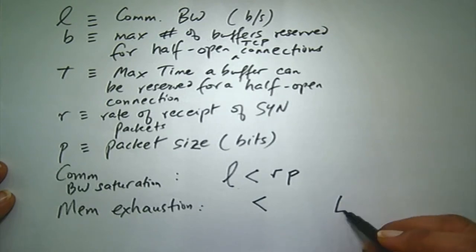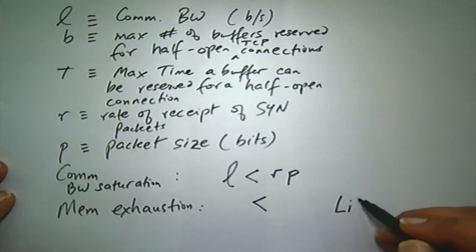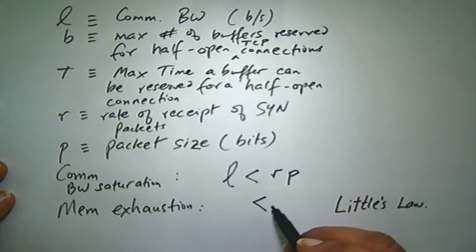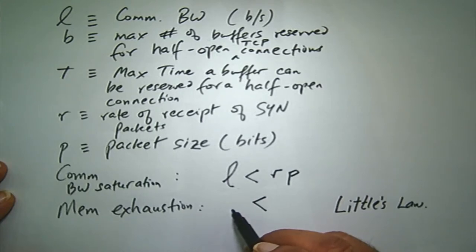You can use something called Little's Law, which is very useful in communications and networking. N = λT — N is the average number in the system, λ is the arrival rate, and T is the average time spent. So what is N and what is λ in this context? Lambda is the arrival rate of SYN attack packets. Little's Law is very useful, and I'd like to use it in this context.